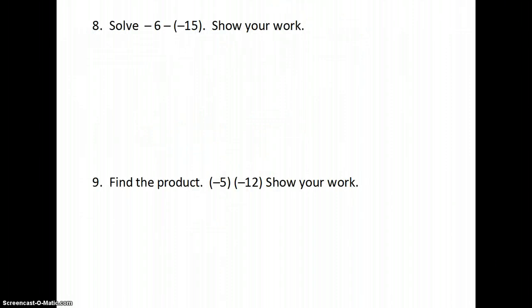The next is subtraction with integers, so we have -6 - (-15). If you want to use the KFC method, we keep, then we flip, and we change. So we keep the -6, we flip the sign, and we change that to being positive. So it ends up being -6 + 15.